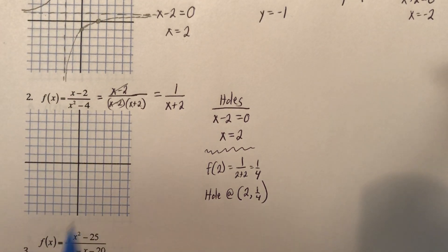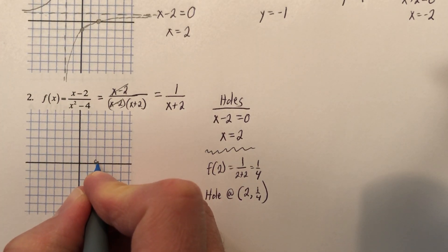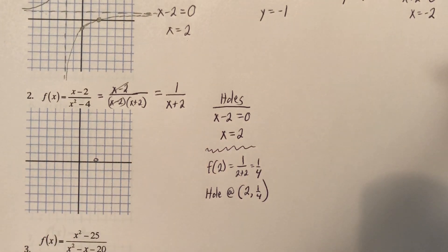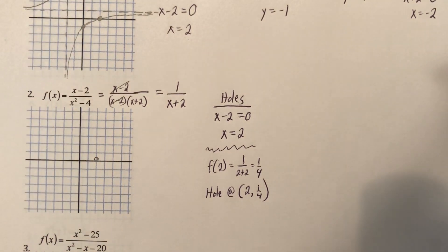So at 2 comma 1 fourth, I'm going to use a pencil for this. There's a hole. So don't put a dot. You actually would put a circle. It's at 1 fourth. That doesn't look like 1 fourth, but whatever. It's close enough.